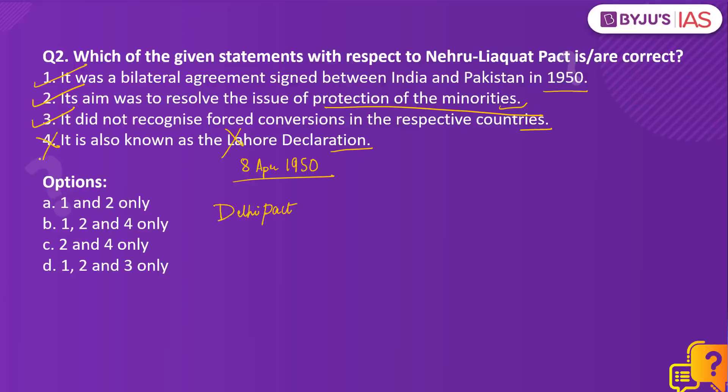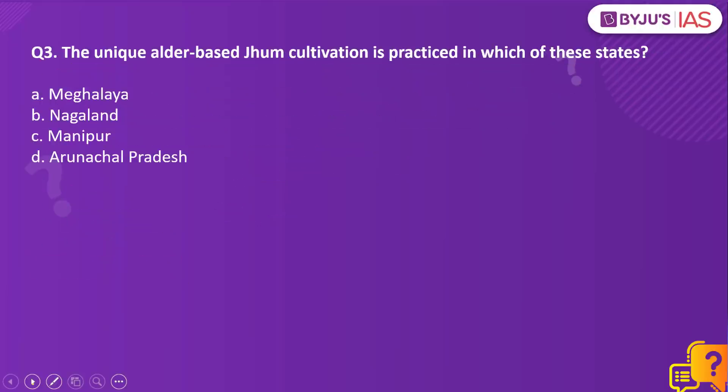The Nehru-Liaquat Pact is also known as the Delhi Pact, not the Lahore Declaration, making statement 4 incorrect. The Lahore Declaration was a separate bilateral agreement signed between India and Pakistan in 1999 after a summit at Lahore. Therefore, the right answer to this question is option D — statements 1, 2, and 3 only.